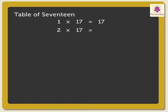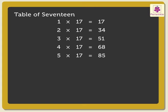3 × 17 are 51, 4 × 17 are 68, 5 × 17 are 85, 6 × 17 are 102, 7 × 17 are 119.